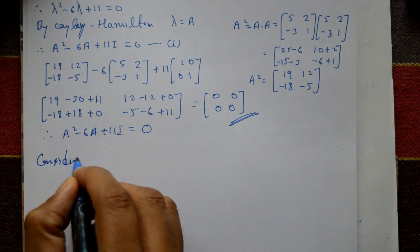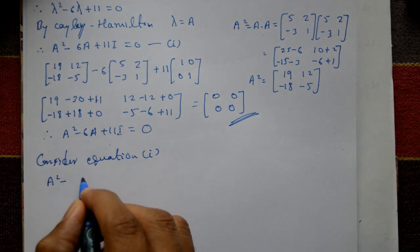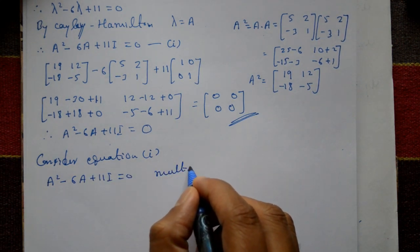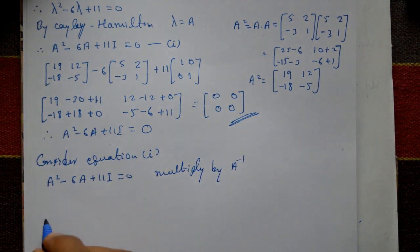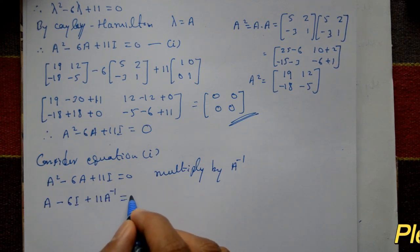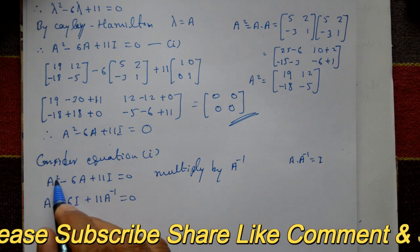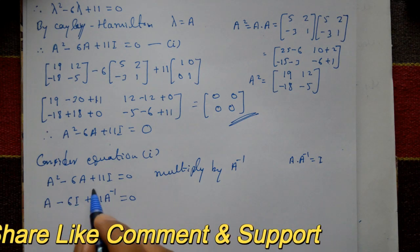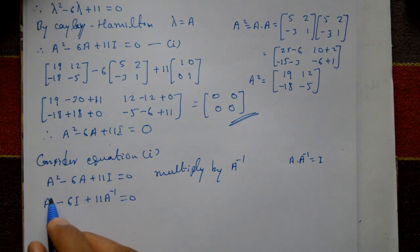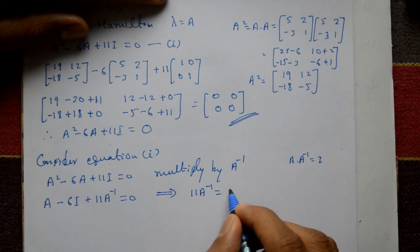Next, to find the inverse, consider equation one: A² - 6A + 11I = 0. Multiply both sides by A⁻¹: A·A⁻¹ gives I, so A - 6I + 11A⁻¹ = 0. Since A·A⁻¹ = I and I·A⁻¹ = A⁻¹, we get 11A⁻¹ = 6I - A.